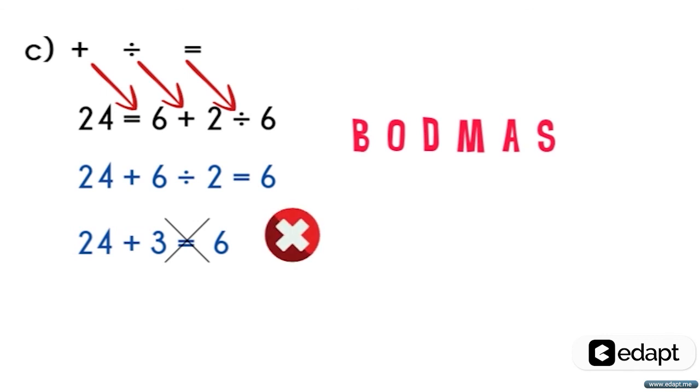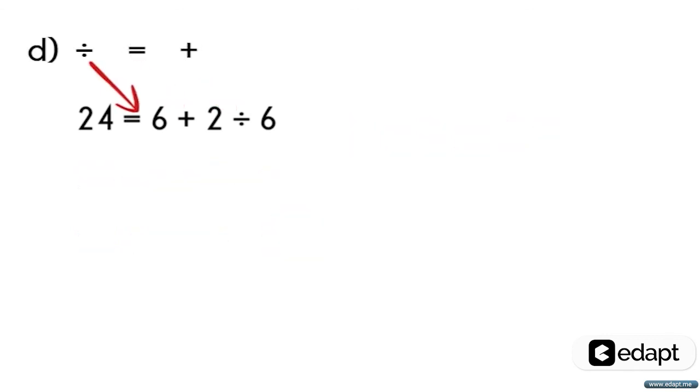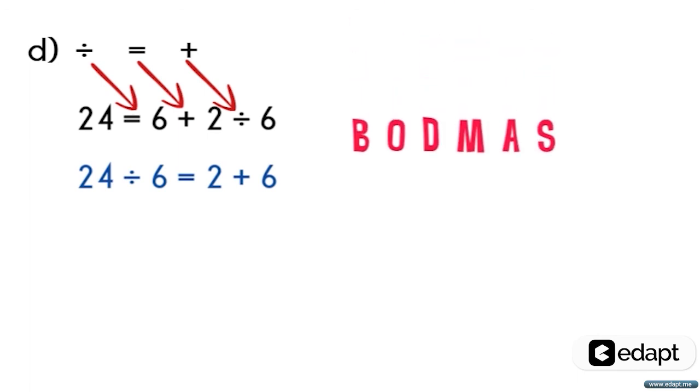Now let us go with the last option, option D. The equation will become 24 divided by 6 is equal to 2 plus 6. As the BODMAS rule gives the division as the first order, we will get 24 divided by 6 is equal to 4, and the equation becomes 4 is equal to 2 plus 6. It is also false.